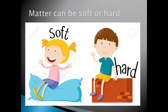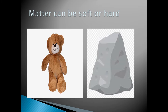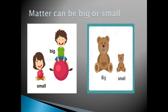But all matter is not the same. Matter can be soft or hard. Soft, like this pillow — when you press on it, it will change shape. Or hard, like this wall — if you try to press on it, it will not change its shape. Can you tell me which picture is soft and which is hard? Yes, very good! The bear is soft while the rock is hard.